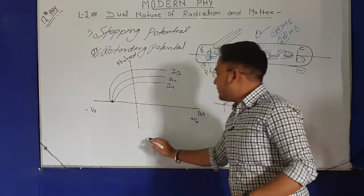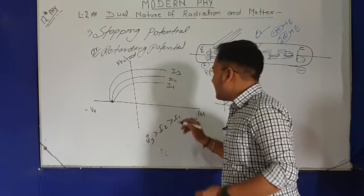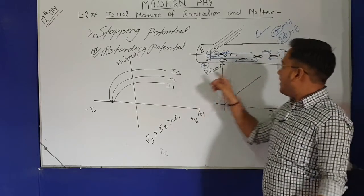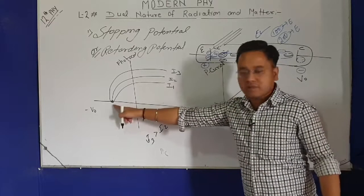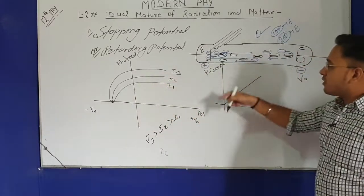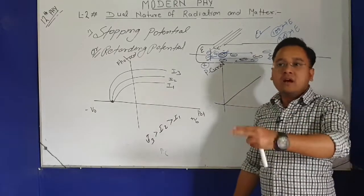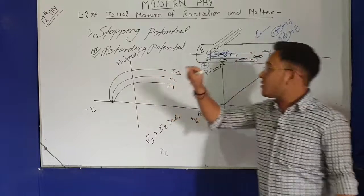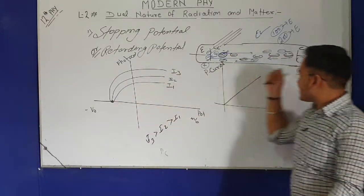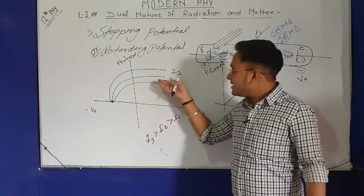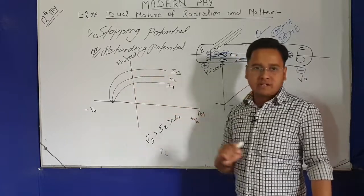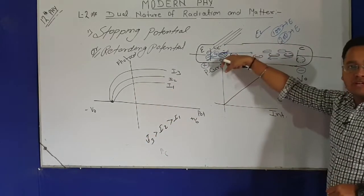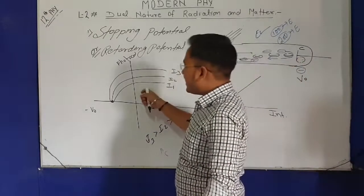Suppose at intensity I1 the photo current had a certain value, and the stopping potential was V-naught. When I increase intensity, more electrons come out — 100 becomes 200 — so photo current increases. But since the energy of each electron is the same, the repulsion happens at the same potential. Even if 200, 400, or 500 electrons come, all of them have the same energy, so all of them get repelled at the same negative potential. The stopping potential does not change with intensity.